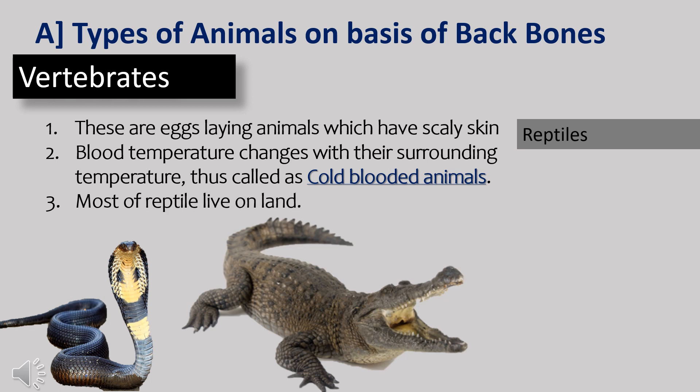Reptiles are egg-laying animals which have scaly skin. Their body temperature changes with the temperature of their surroundings, so they are also called cold-blooded animals. Most reptiles live on land. For example, lizards, crocodiles and snakes are reptiles.